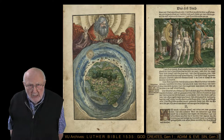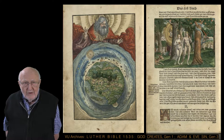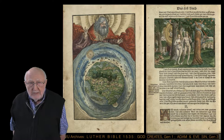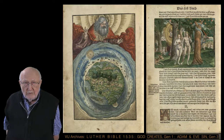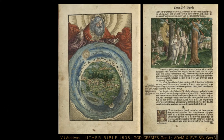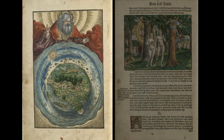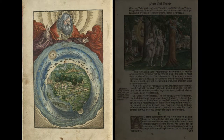These pages are from the 1535 Wittenberg edition of the Luther Bible held in the Valparaiso University archives. The image on the left is the frontispiece of the Old Testament.